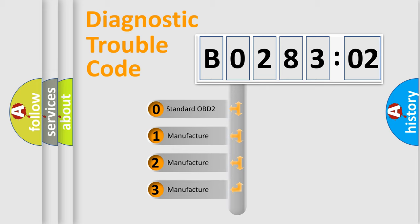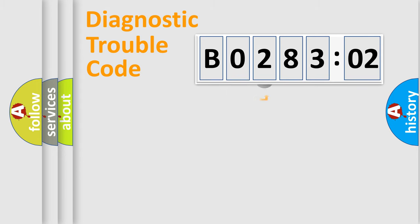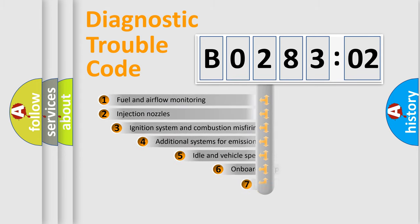If the second character is expressed as zero, it is a standardized error. In the case of numbers 1, 2, 3, it is a manufacturer-specific expression of the error.